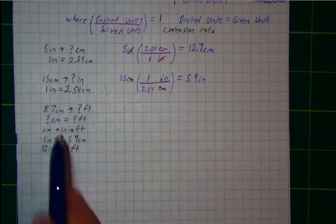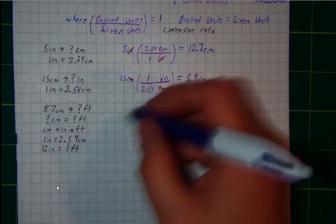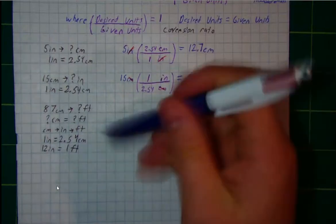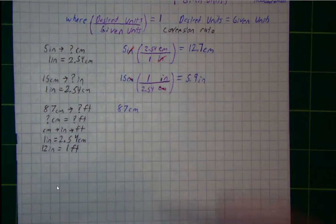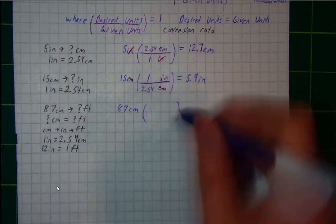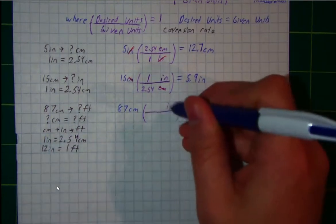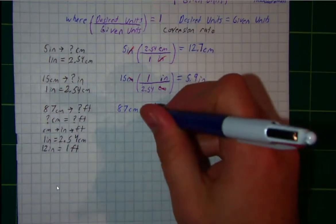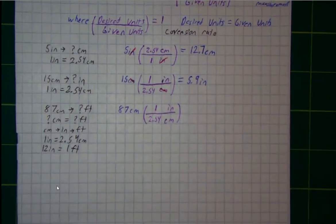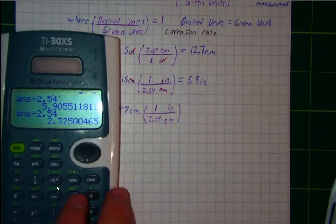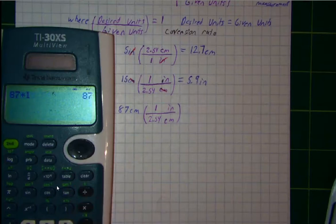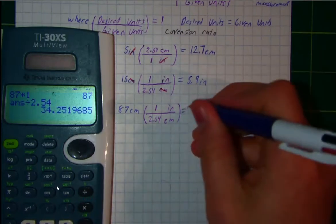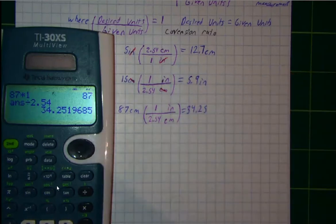I'll start by converting from centimeters to inches. My given measurement is 87 centimeters, and my desired units are inches. So I put inches on top and centimeters on bottom. I know that 1 inch equals 2.54 centimeters. Plugging into my calculator: 87 times 1 divided by 2.54 gives me 34.25. Centimeters cancel out, so I'm left with inches.